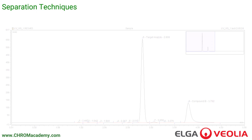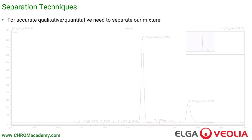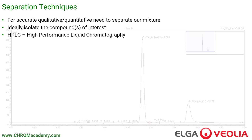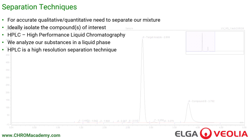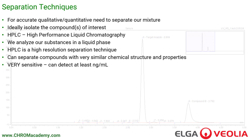We need a way of analysing a sample that actually separates our target analyte out from all the other potential interference that is present. These are called separation techniques. For accurate qualitative and quantitative analysis, we need to be able to separate the mixture and ideally isolate the compound we're interested in measuring. HPLC — high performance liquid chromatography — is a very high performing separation technique where we analyse our substances in the liquid phase. It's very high resolution, with the ability to separate out lots of substances of very similar chemistries. It's also very sensitive; we can detect, in many cases, at least nanogram per millilitre concentrations of our analyte.